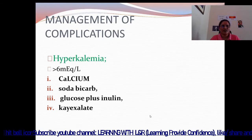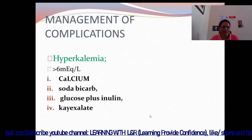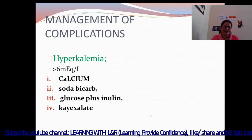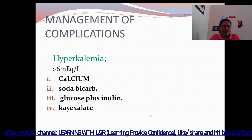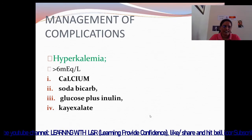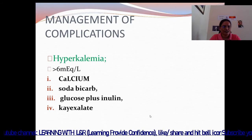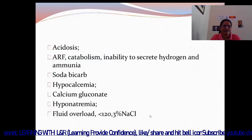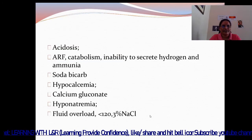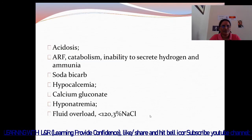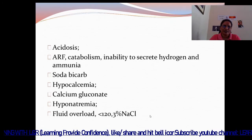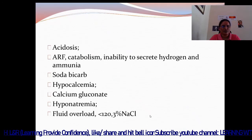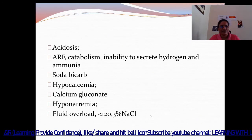Management of complications: hyperkalemia — potassium more than 6 mEq per litre — treat with calcium, sodium bicarbonate, glucose plus insulin, and K-excelate. For acidosis in ARF due to catabolism and inability to secrete hydrogen ions — give sodium bicarbonate. Hypocalcemia — calcium gluconate; hyponatremia and fluid overload are also managed.